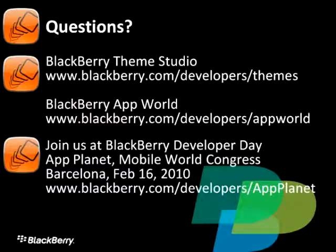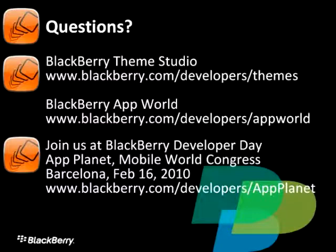A question from a developer frustrated that separate theme files and numerous exports are needed for multiple devices — has any effort been made to simplify that process? We're quite aware of the pain points. The issues surround the OS, as some OSes are different — for example, the 8900 does not have SVG phone screens, whereas the newer 9700, of the same form factor, does. Differences in the OS require different kinds of themes. We're looking at better ways in the future to optimize that, so at minimum, for all similar form factors, you'd be able to create one export and have it go out to multiple devices.